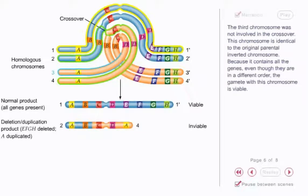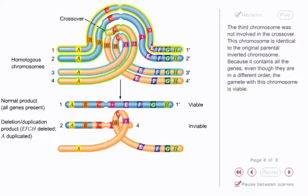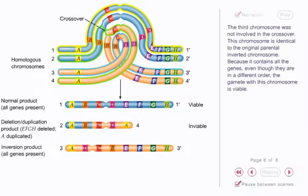The third chromosome was not involved in the crossover. This chromosome is identical to the original parental inverted chromosome. Because it contains all the genes, even though they are in a different order, the gamete with this chromosome is viable.